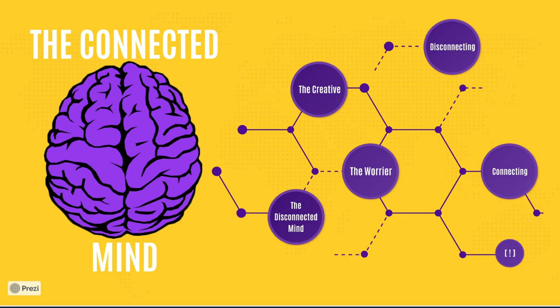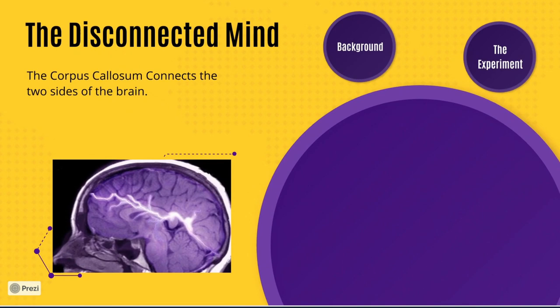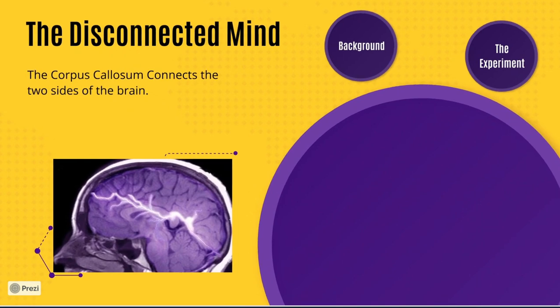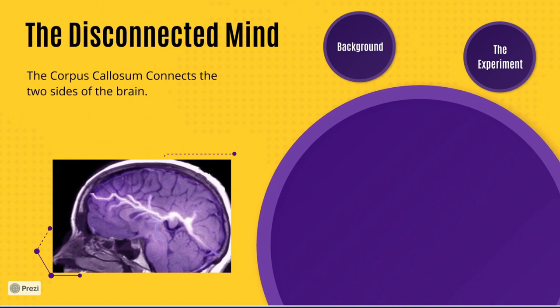In the 50s and 60s there was an emerging treatment for seizures where they severed the corpus callosum of severe epilepsy sufferers to minimize their effects. The corpus callosum is the only line of communication between the left and right hemispheres of the brain. They did this to counter the electrical signals firing around the brain that causes seizures. The plan was to stop these signals reaching both sides of the brain by snubbing them out when they reached the connection between the two sides. While we no longer do this, it did seem to work.